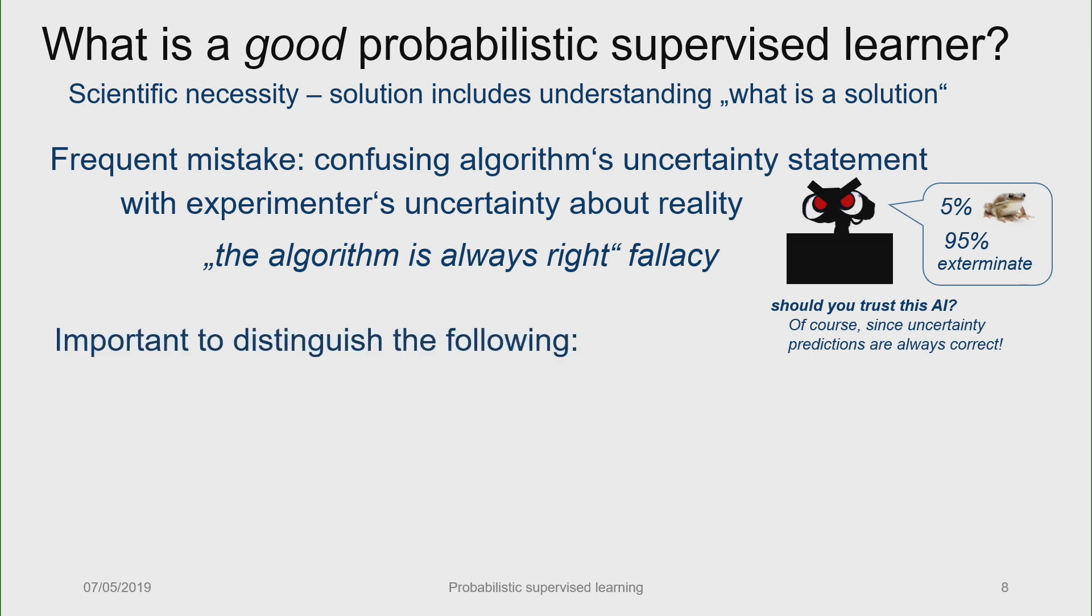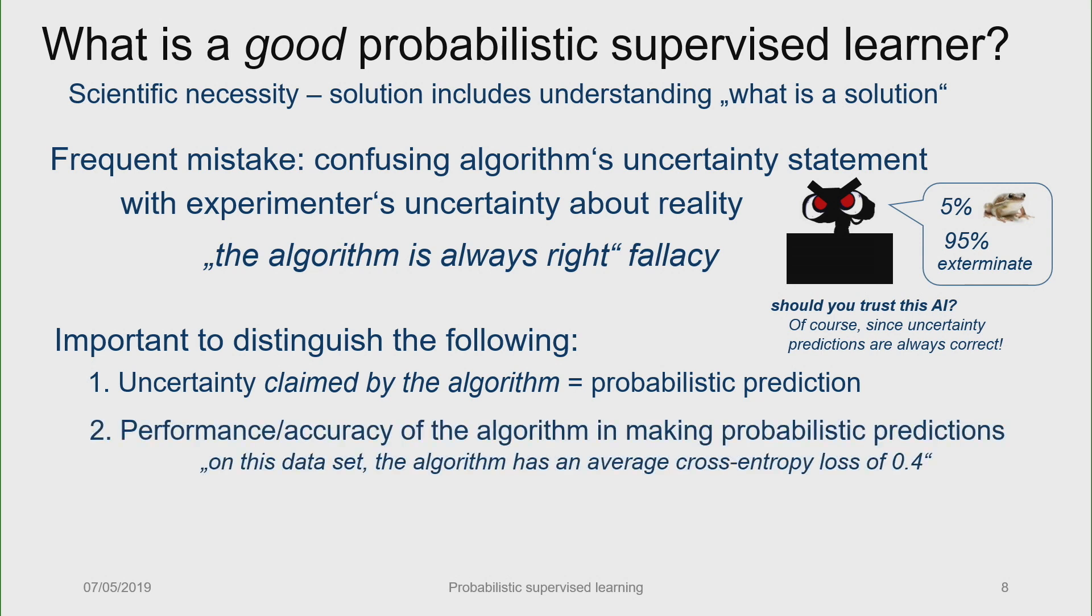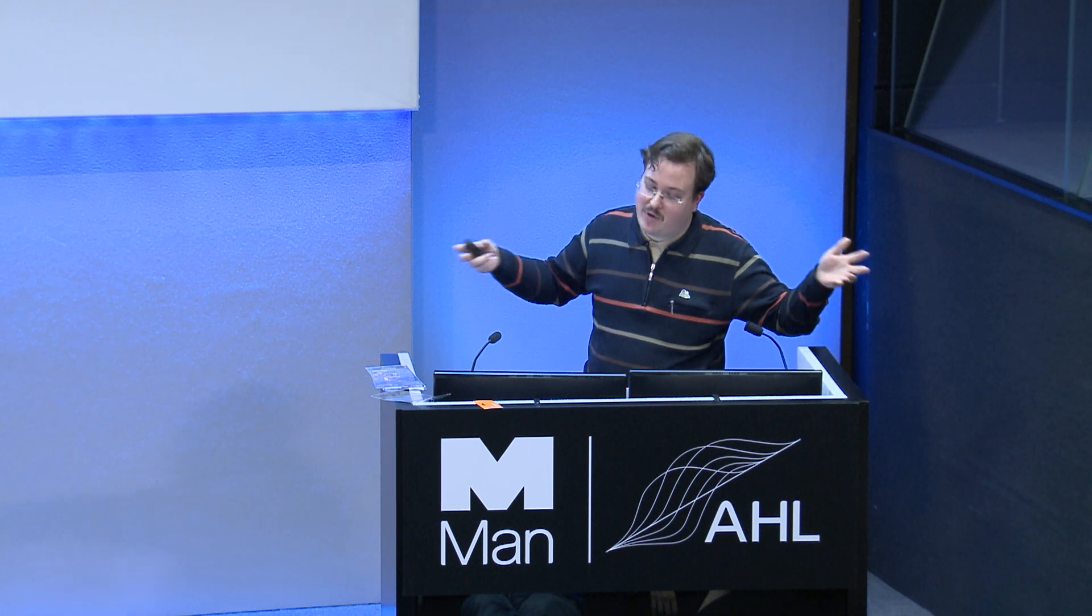Hence, it is important to distinguish, and it might be worthwhile to keep this in mind in what follows, to distinguish what the algorithm says, right? So a predictive interval might be, I'm relatively sure the value will be in there. But the algorithm can be wrong, so there will be a performance. The algorithm will have a certain performance in making that kind of prediction. For example, the statement will look like on average, no, I did a train test split, it has a certain loss, maybe the cross-entropy loss of 0.4. Now, in another layer, that statement in itself is uncertain, because it is obtained from a finite amount of data in all practical settings.